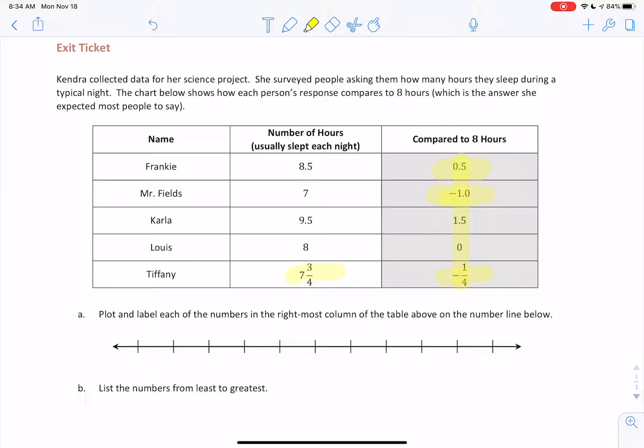Question A says: plot and label each of the numbers in the rightmost column of the table above on the number line below. Okay, rightmost column. That means I am referring simply to this column right here. I'm not using the numbers in the middle column. I'm using only the numbers in the column titled 'compared to 8 hours.' Let's make sure that we graph the correct numbers.